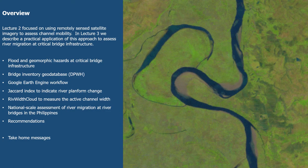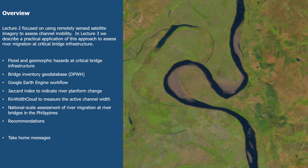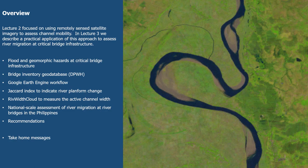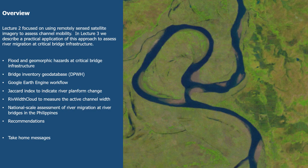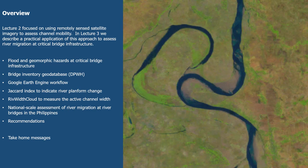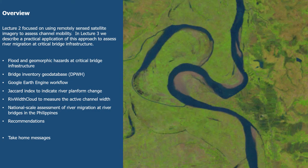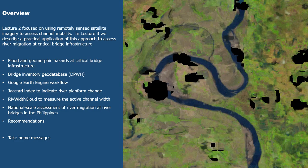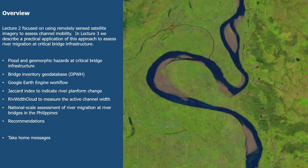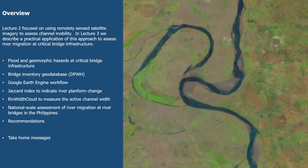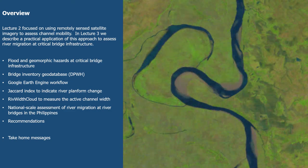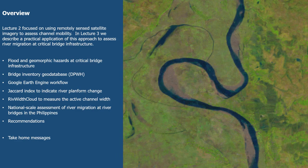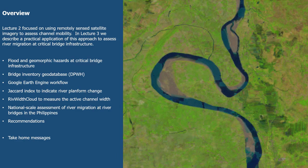First, we'll take a quick look at the different flood and geomorphic hazards we can find at critical bridge infrastructure and look at the bridge inventory geodatabase from the DPWH. We'll talk through the Google Earth Engine workflow, how similarity coefficients such as the Jaccard index can be used to indicate river planform changes, an application called RivWidth Cloud to measure changes in active channel width, and then bring this together for a national scale assessment, providing recommendations and take-home messages.